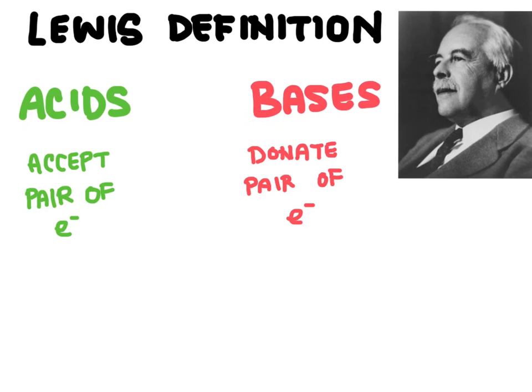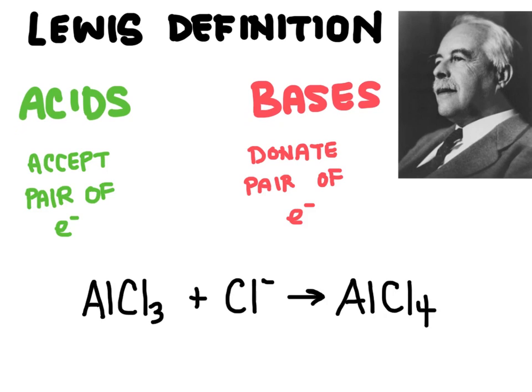This definition is a bit confusing, but here's an example. Aluminum chloride can react with a single chloride ion to form this new compound right here. And this chloride ion, because it has the negative charge there, means it has an extra pair of electrons.